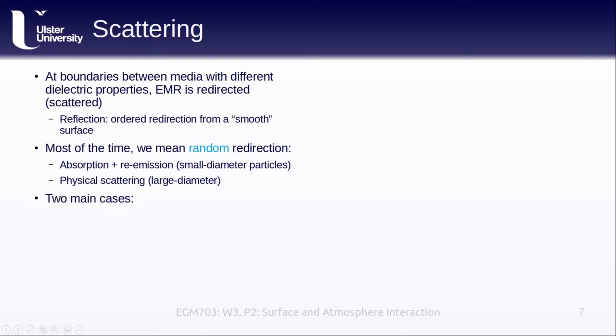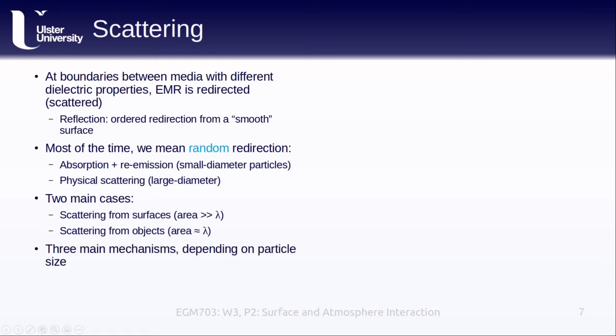We have two main cases of scattering that we'll consider in microwave remote sensing. The first is scattering from surfaces, which happens when the area of the scatterer is much larger than the wavelength, and the second is scattering from objects, which happens when the area of the scatterer is about the same size as the wavelength. Depending on the size of the particle, we have three main mechanisms or types of scattering that we might see.